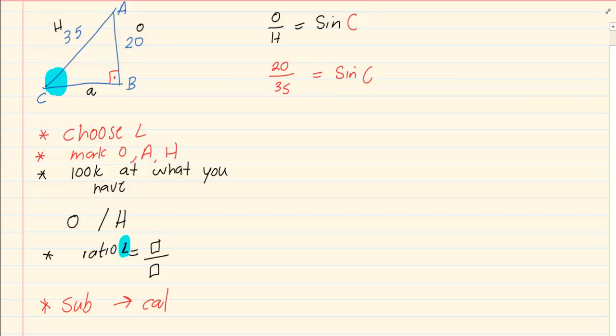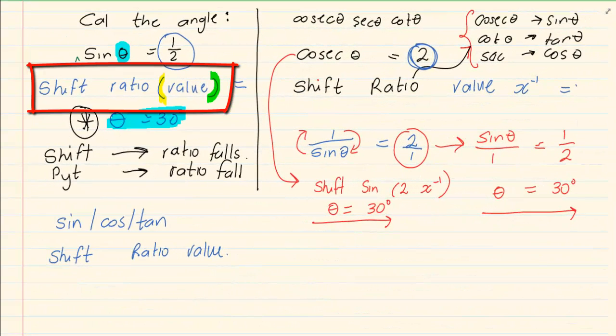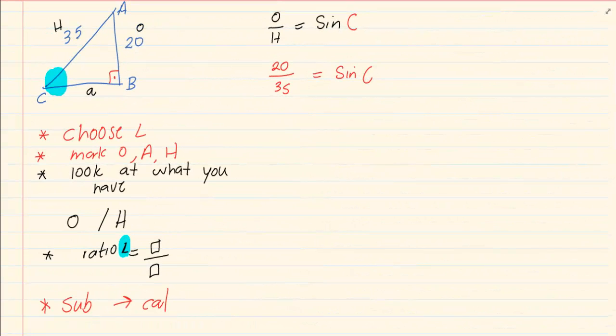And then you are going to use your calculator. So I have 20 over 35 is equal to sin C. Now when I say use your calculator, we are calculating an angle. When we are calculating an angle, we are going to press shift the ratio and the value. We are going to press shift sin 20 over 35 close brackets. That would give us our angle. C is equal to 34.85 degrees.